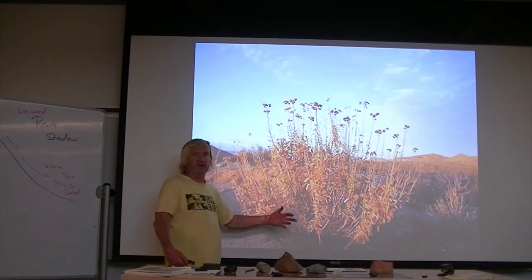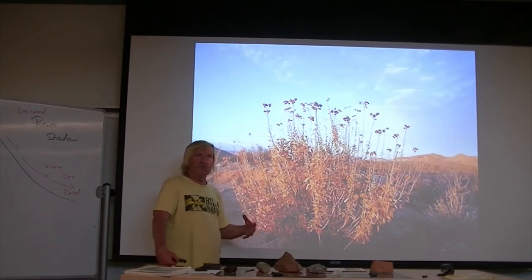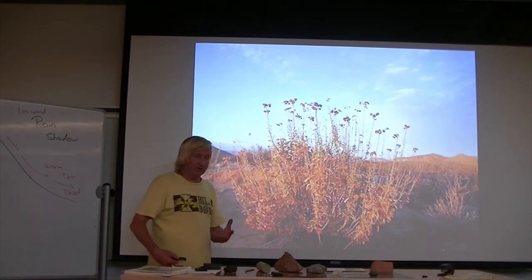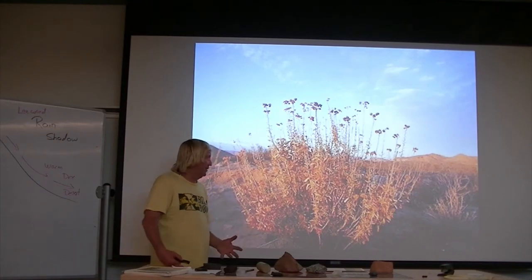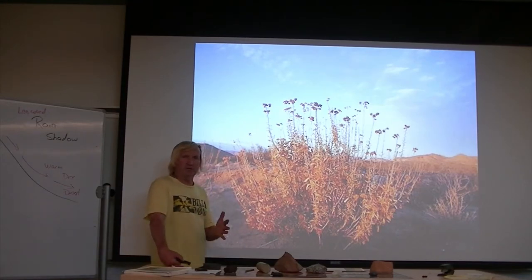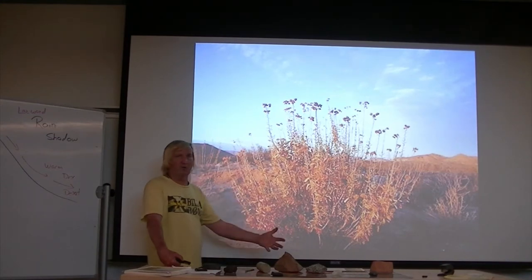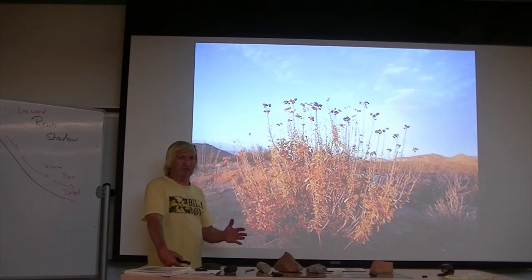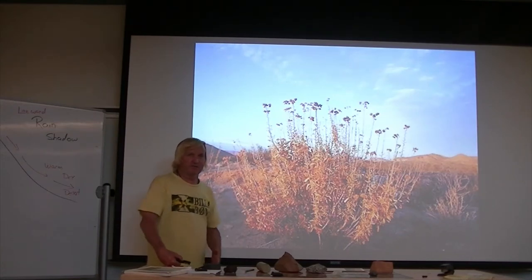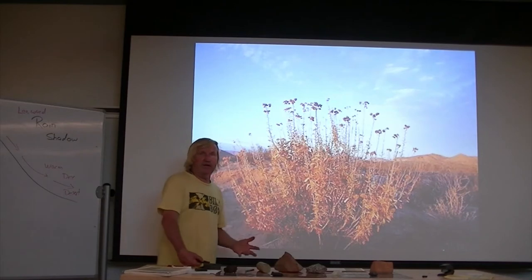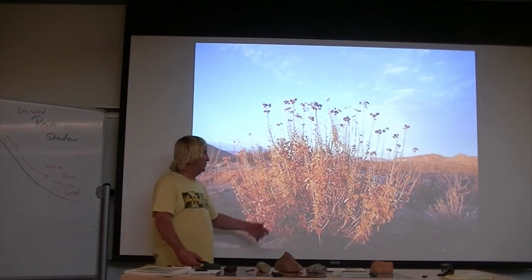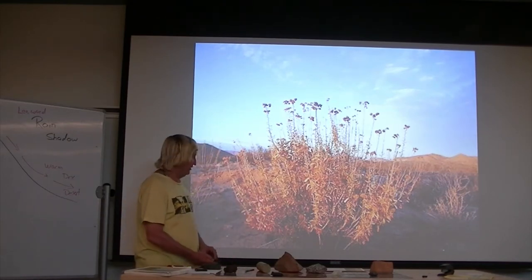The bloom varies from year to year. This year there was significant rainfall — California's February was like April, and March was like January or December. That late rain resulted in a really significant bloom for the deserts this year.